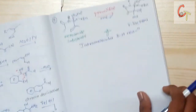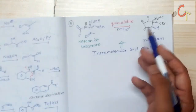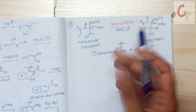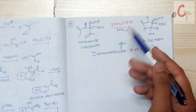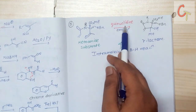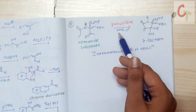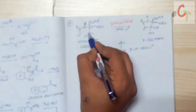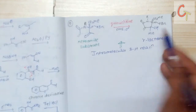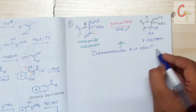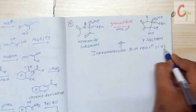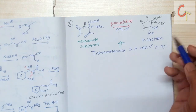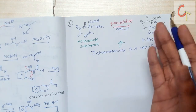Let's look at another example — this is an intramolecular Baylis-Hillman reaction. A ketoamide substrate reacts with quinuclidine in the presence of DMA at zero degrees Celsius. There is a carbon-carbon bond formation, and we get a diastereomeric racemic mixture in a 1:9 ratio — that is, a γ-lactam product is formed. This Baylis-Hillman reaction is important from a competitive exam point of view.